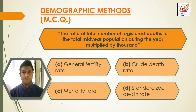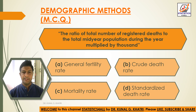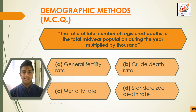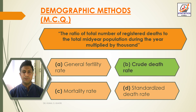Next question: the ratio of total number of registered deaths to the total mid-year population during the year, multiplied by 1000 — Option A: general fertility rate, Option B: crude death rate, Option C: mortality rate, Option D: standardized death rate. The answer is Option B — crude death rate.